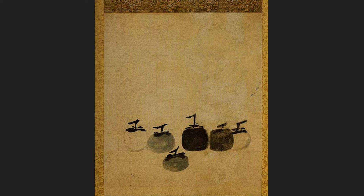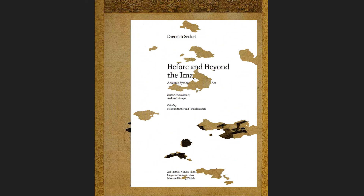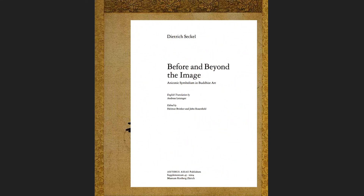So as we turn back again to this painting, with those six pieces of fruit ranging in value from light to dark, arranged not on a tree branch or on a tabletop, but against an austere unpainted ground, we have to ask: what's going on? We'll turn now for a moment to an essay titled Before and Beyond the Image: Aniconic Symbolism in Buddhist Art, by the author Dietrich Sekel.